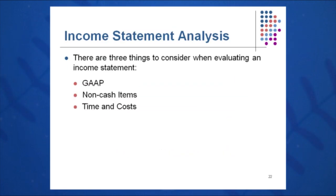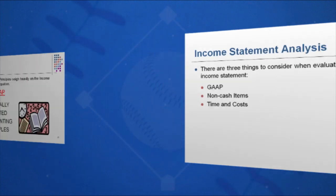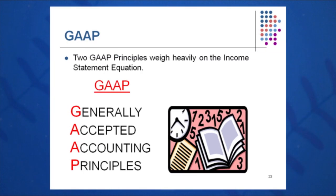When I analyze an income statement, I put on three sets of goggles: GAAP goggles — generally accepted accounting principles — I also look for non-cash items, and I look at time and cost. These are the three sets of goggles I use when analyzing an income statement.